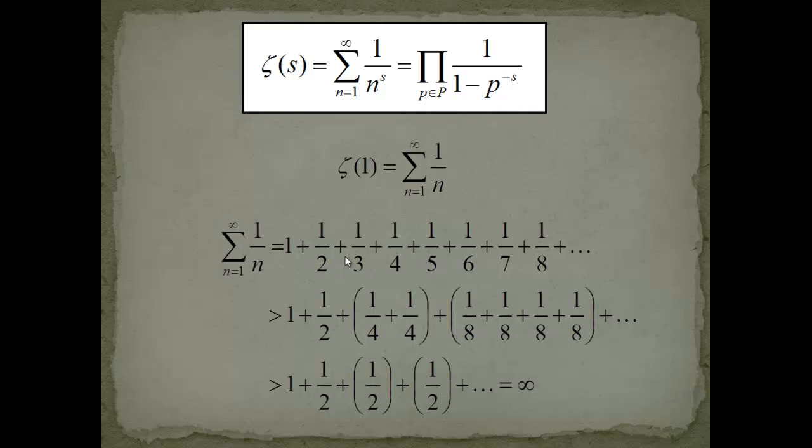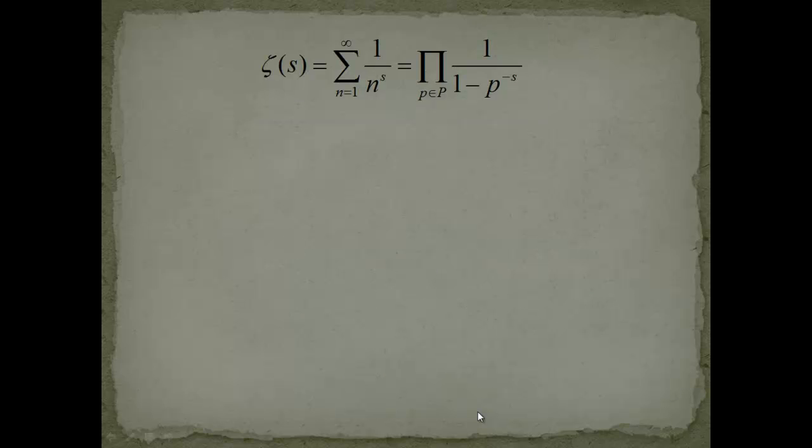But we show that you can always find a small set of them which is one half. And so this is the divergence, first of all. This is the first step. Now what we can do next is we just look at this again. We found out that zeta of one, so if we plug in the s value of one, we get an infinitely large value.